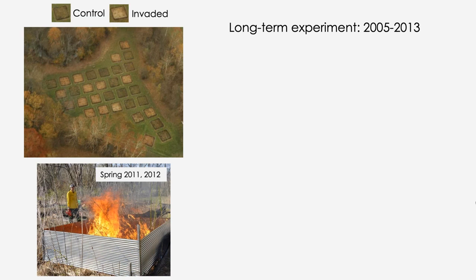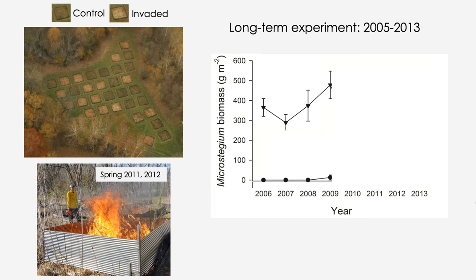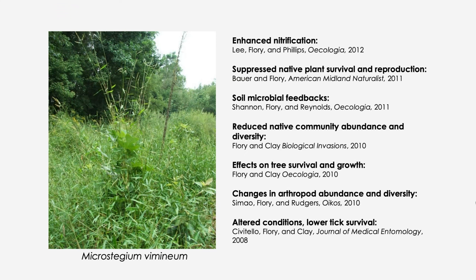Near Bloomington, Indiana, I set up five-by-five meter plots in a forest opening. You can actually see the treatments in the aerial photo because Microstegium, being a C4 grass, senesces earlier in fall than the C3-dominated native plots — all the brown plots are the invaded plots. In the spring of 2011 and 2012 we divided the plots into four quadrats and burned one of them. Microstegium did very well in the first four years, and we published papers on its effects: altering nitrification, suppressing native plants, changing soil microbial feedbacks, altering tree survival and growth, and affecting insects.